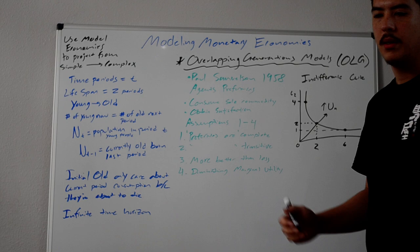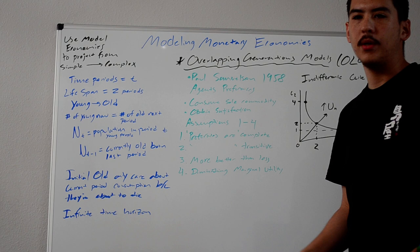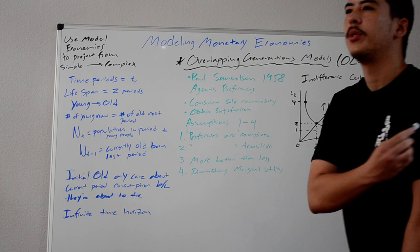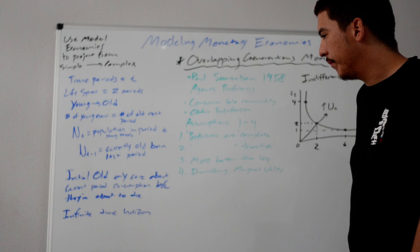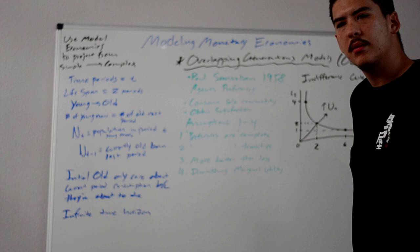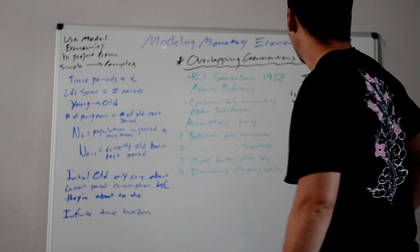We use model economies to project from simple to complex. If you understand the simple functions of the economy, you can add more variables in the ceteris paribus fashion, where you hold everything else equal, and you introduce one new variable at a time, which is how you model most economics. You always do everything under the assumption of ceteris paribus, which is holding all else equal. You'll see it as cp or ct in textbooks, and that's what it represents.